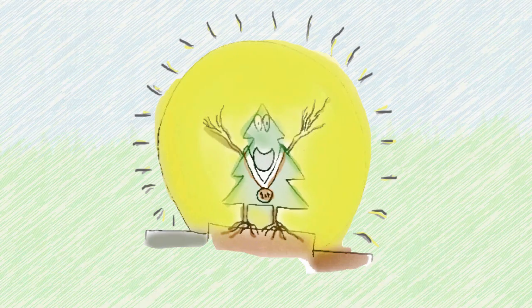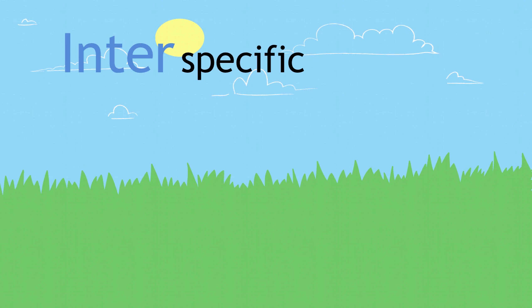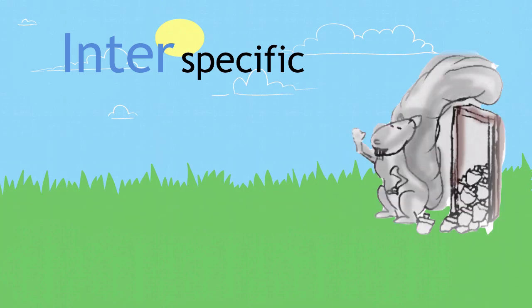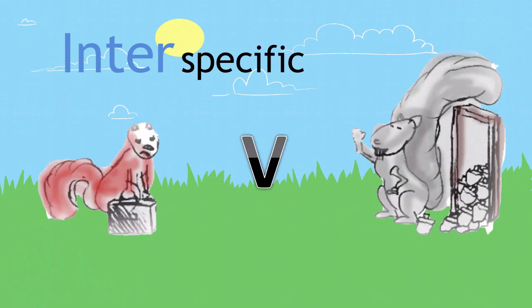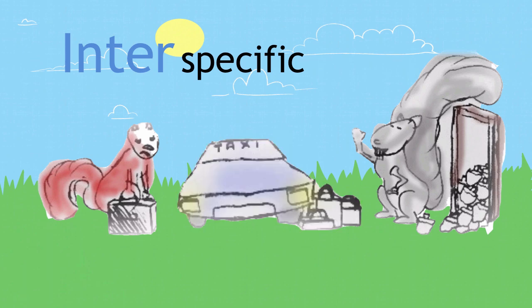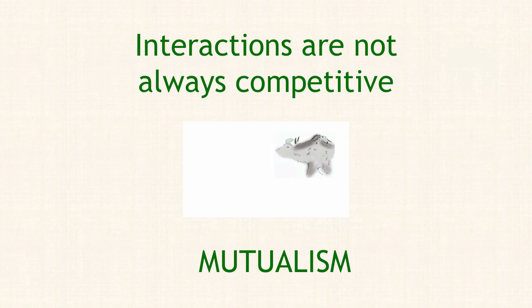Another example of inter-specific interaction is that between the grey squirrel and the red squirrel, who compete over the same habitat. The more aggressive grey squirrel has over time pushed many red squirrel populations out of their habitats. Not all of these interactions have to be competitive — you'll learn this in the video on mutualism.